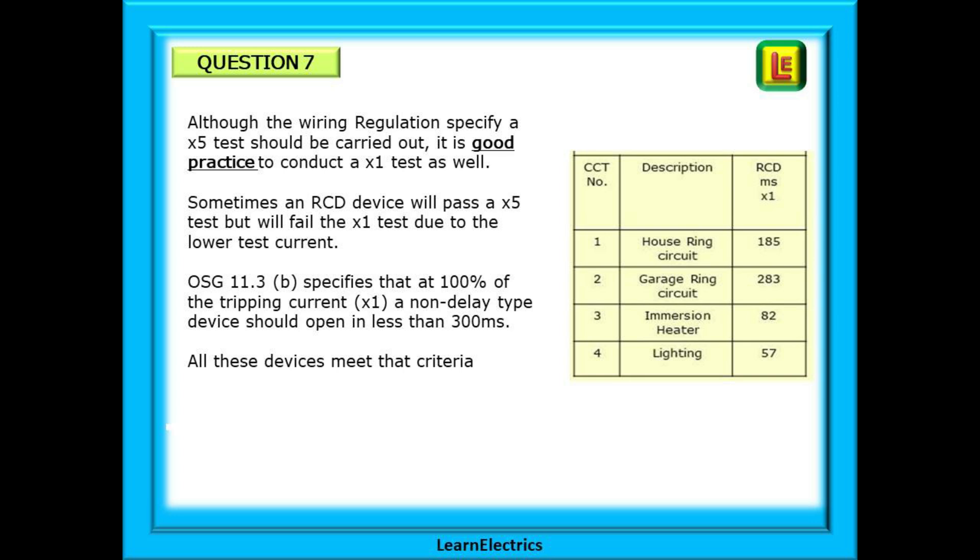Although the wiring regulations specify that a x5 test should be carried out, it is good practice to conduct a x1 test as well. The reason for this is that sometimes an RCD device will pass a x5 test because of the higher test current, 150 milliamps in this case, but will fail the x1 test due to the lower test current at just 30 milliamps. Without performing a x1 test, you may be leaving the customer exposed to potential harmful shock currents of up to 150 milliamps and nobody knows until it happens.